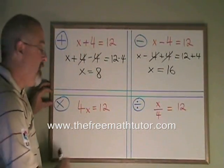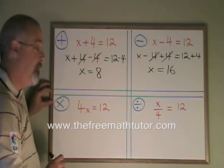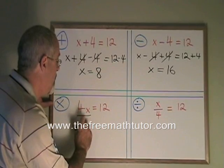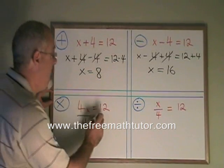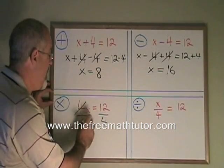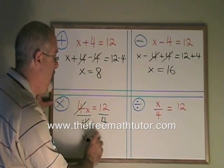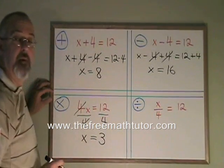Multiplication. Here the x is being multiplied by a 4, and the opposite of multiplication is division. So I have to divide that side by a 4. But if I'm going to divide the left side by a 4, I also have to divide the right side by a 4. These cancel. My x is isolated and is equal to 12 divided by 4, which is 3. I have my answer.